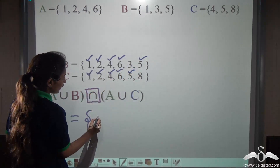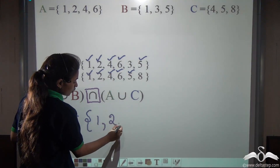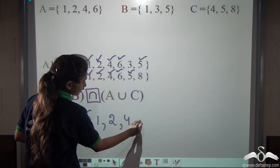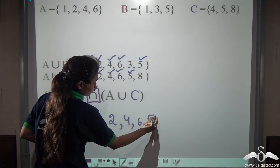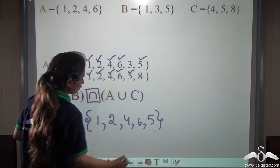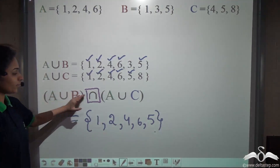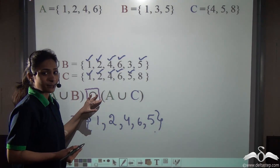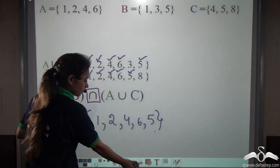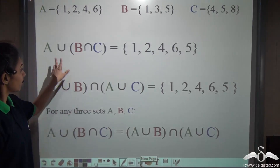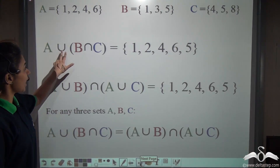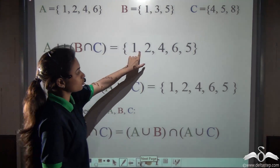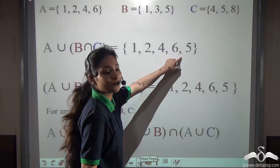So let us write the answer: 1, 2, 4, 6, 5. This is what we get from the right hand side. Remember what did we get on the left hand side? We got A union (B intersection C) as 1, 2, 4, 6 and 5.